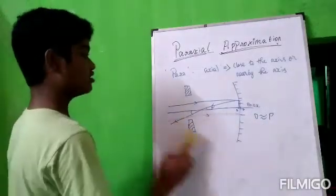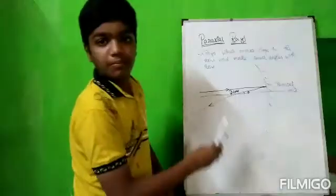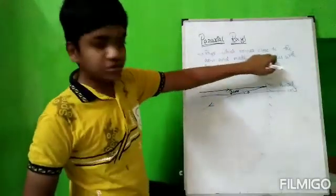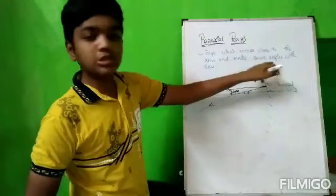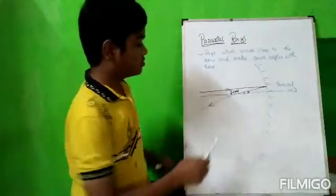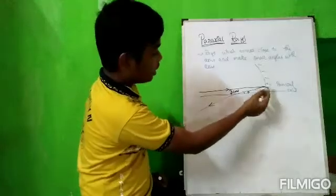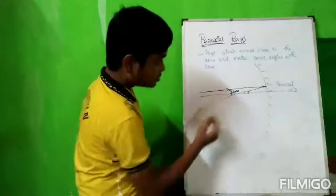Paraxial rays. Rays which come close to the axis and make small angles with the axis.